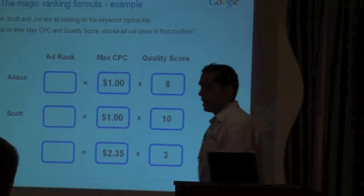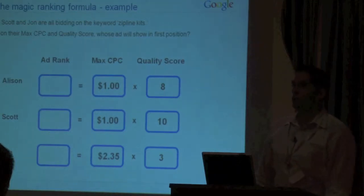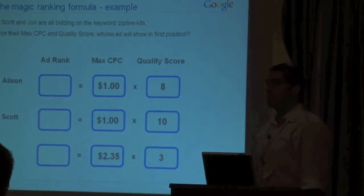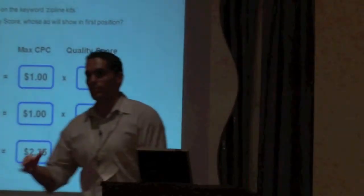Scott? Everybody says Scott. What about John? John's paying $2.35. Why can't he show up? Quality score as well? Very good. You're learning. Awesome. You're doing a decent job.